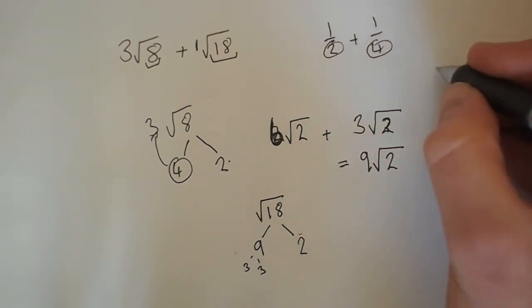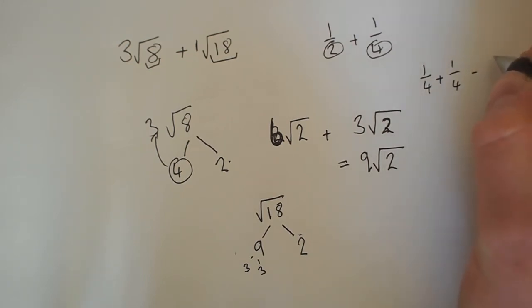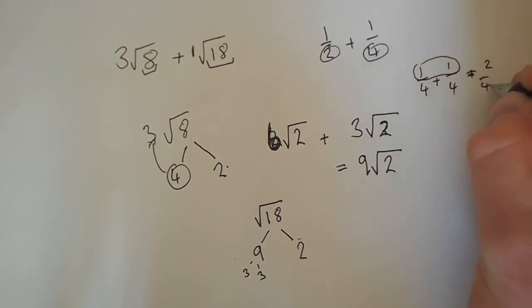It's like when doing fractions. If we add a quarter and a quarter, it doesn't make it 2 eighths. We just add the numerator at the top. That's just an example.